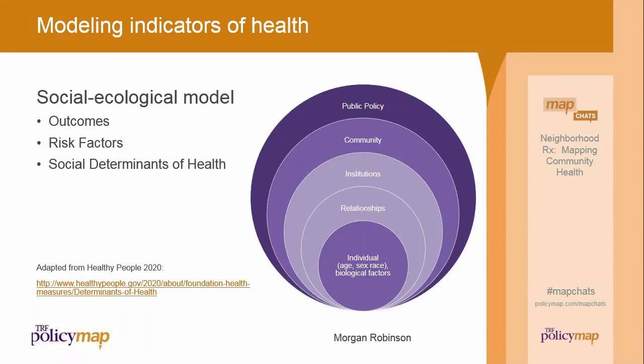Health can be measured in many different ways. We can look at outcomes — things like disease rates and mortality — and we can look at risk factors. For example, increased fruit and vegetable consumption is linked to better cardiovascular health. While we don't have a direct measure of the number of people at risk for a heart attack, looking at eating patterns or even access to healthy food in a neighborhood can clue us in. We can also look at social determinants of health, because socioeconomic status and race are known and demonstrated predictors of health. But using only those indicators may not be sufficient to tell the story of how health plays out in communities.